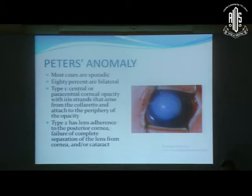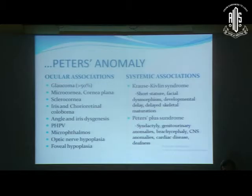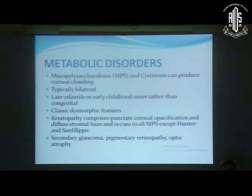Peter's anomaly is another condition that can mimic congenital glaucoma. Most cases are sporadic and 80% are bilateral. Type 1 has central or paracentral corneal opacity with iris strands arising from the collarette attaching to the periphery of the opacity. Type 2 has lens adherence to the posterior cornea, failure of complete separation of the lens from the cornea, and oblique cataract. Peter's anomaly has myriad ocular and systemic associations, with glaucoma seen in more than 50% of cases.